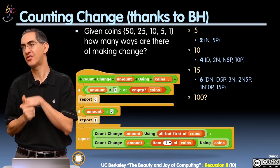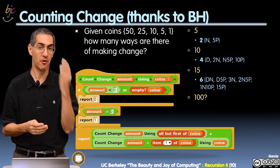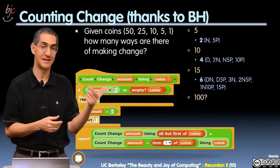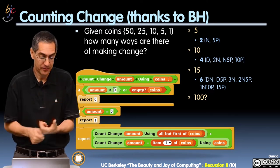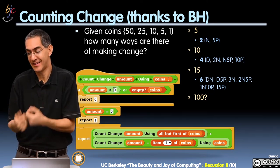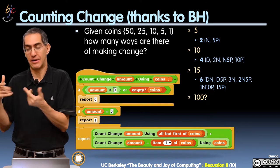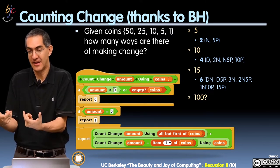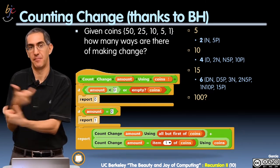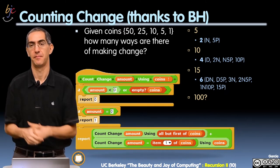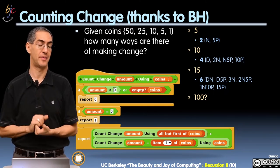How many ways of making change for a dime? Four ways: a dime, two nickels, a nickel and five pennies, and ten pennies. Now don't think that a nickel and five pennies is one way and five pennies and a nickel is another way — that's the same way. Four ways. So that's not so bad.